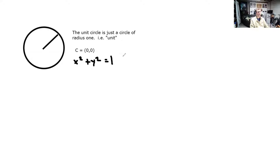We learned about the standard form for the equation of a circle: x minus h squared plus y minus k squared equals the radius squared. But if our radius is 1, it's just equal to 1. And if our center is (0, 0) — if h and k are both 0 — then it simplifies to just x squared plus y squared equals 1. So it's not too difficult to verify that a given point is or is not on the circle.